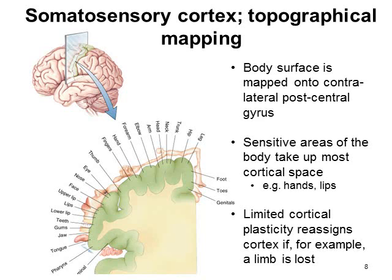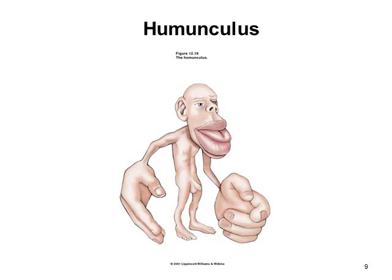The process of taking the somatic sensory cortex and identifying which part of the cortex relates to which part of the body is called topographical mapping. The body surface is mapped onto the contralateral post-central gyrus — the somatic sensory cortex. Sensitive areas of the body take up the majority of the cortical space, for example the face, hands, and lips. There is limited cortical plasticity, however — if a limb is lost, that part of the cortex will reassign to another part of the body, so that you've not lost that functionality.